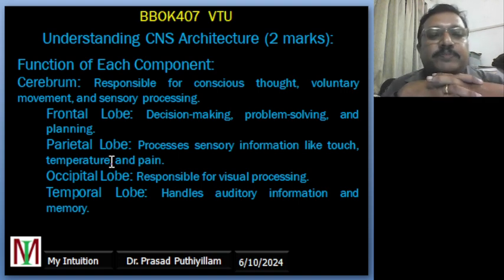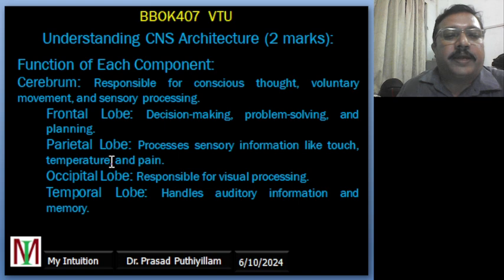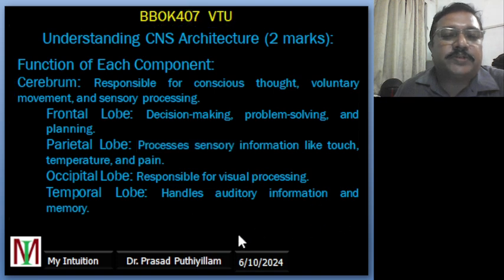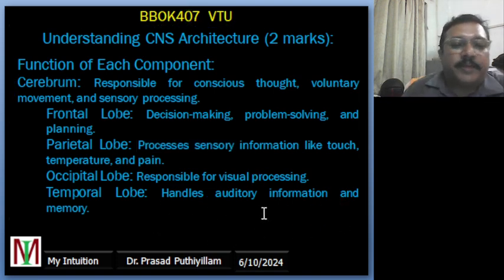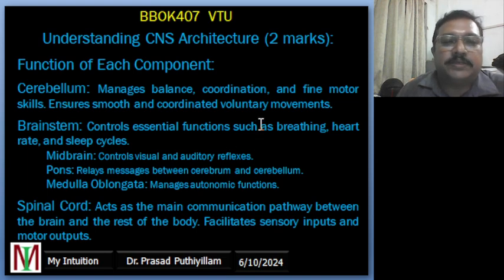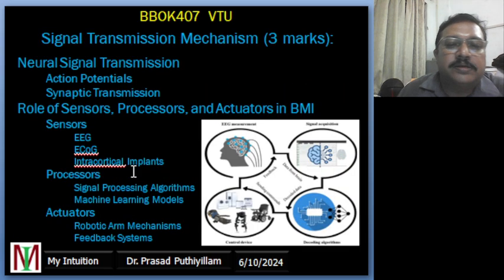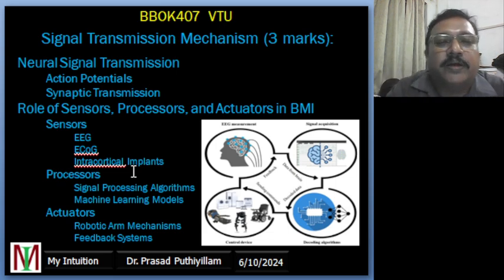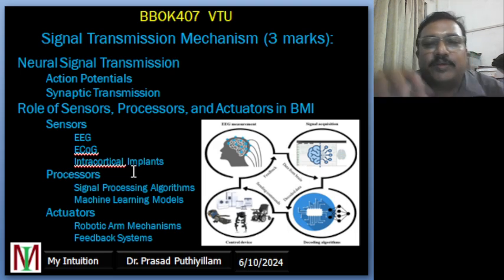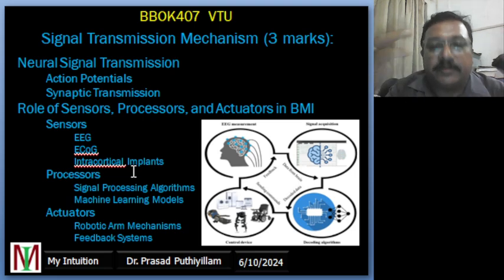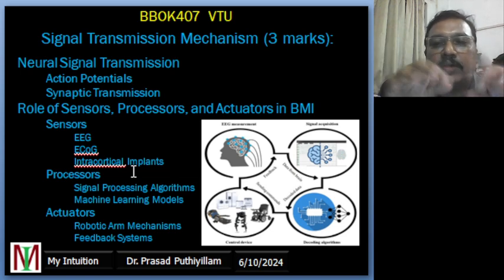Now, functions of each component: cerebrum is responsible for conscious thought and voluntary movement. Frontal lobe: decision making, problem solving, and planning. Parietal lobe: processes sensory information like touch, temperature, and pain. Occipital lobe: responsible for visual processing. Temporal lobe: handles auditory information and memory. I'm sharing this slide — go through it. Now, signal transmission mechanism: how different parts of our brain communicate — you need to recall the different parts, their roles, and how they can be applied in electronics or mechanical engineering connections.